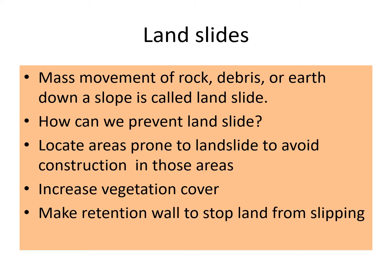Landslides: mass movement of rock, debris or earth down a slope is called a landslide. The areas which are made up of unconsolidated rocks, such as Shivalik hills, are more prone to landslides. To prevent landslides: identify areas prone to landslides and avoid construction activity there. We are making roads in hilly areas which lead to landslides. We should plant more trees and increase vegetation cover in these areas, and make retention walls to stop land from slipping.